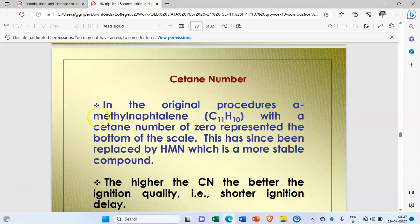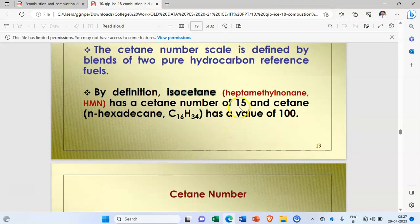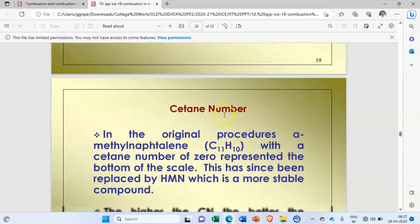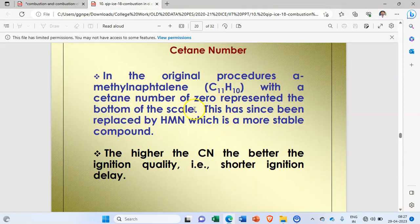In the original procedures, alpha-methylnaphthalene, C11H10, with a cetane number of 0 represented the bottom of the scale. This has since been replaced by HMN, heptamethylnonane, which now indicates the 0 scale. Before that, methylnaphthalene was indicating the cetane number as 0 on the scale.